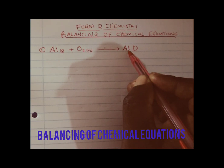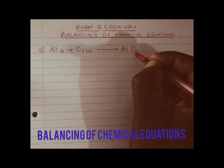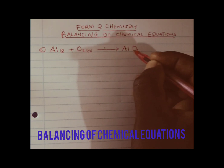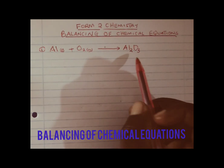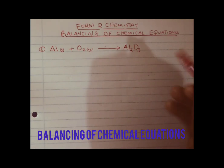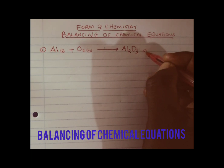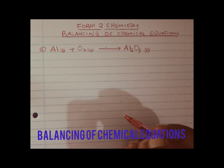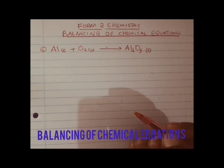Remember, aluminum has a valency of 3, which it gives to oxygen. And oxygen, having a valence of 2, goes to aluminum, giving us aluminum oxide. Remember, metal oxides are solids at room temperature. Having written our correct chemical equation, we now need to do the balancing.